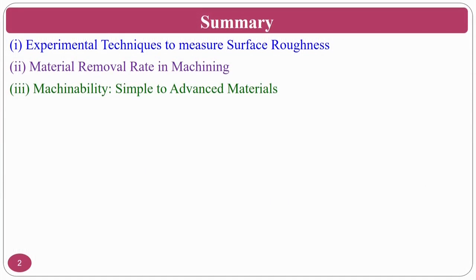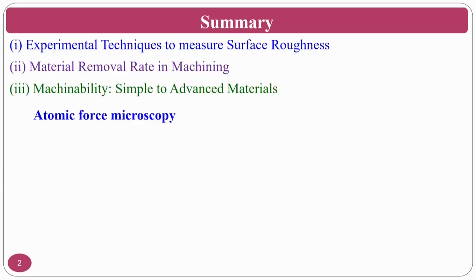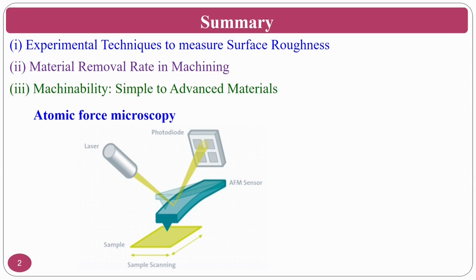We will revisit what was done in the previous class: surface roughness measurement, material removal rate, machinability, and related topics. One point I missed in the last class — surface roughness and surface morphology can also be measured using atomic force microscopy (AFM). This is another technique where you can measure the surface morphology and how the surface looks in three dimensions.